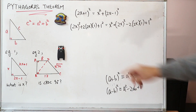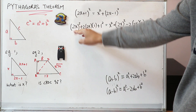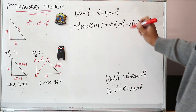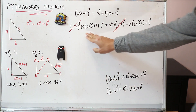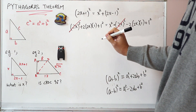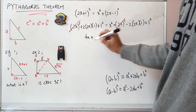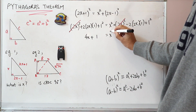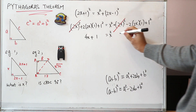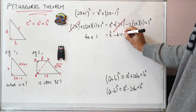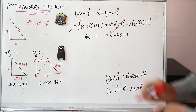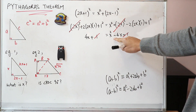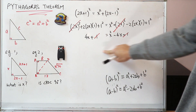So now we can do some simplification. We have (2x) squared on the left-hand side of this equal sign, and we have the same thing on the right-hand side. So both things cancel out. 2 times 2x times 1 is 4x, plus 1 squared which is 1, is equal to x squared minus 2 times 2x which is minus 4x, plus 1. So this 1 and this 1 cancel each other out.